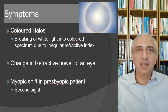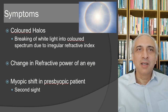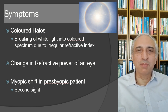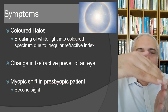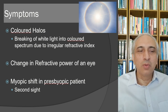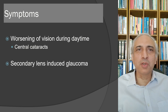Colored halos occur due to breaking of white light into colors from an irregular refractive index. There is also a myopic shift in presbyopic patients because the light is able to converge more towards the retina, producing that shift.